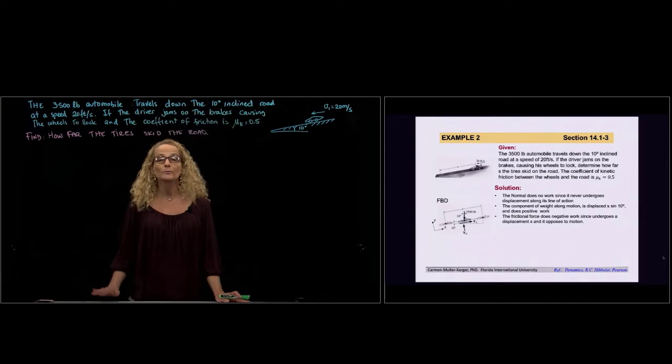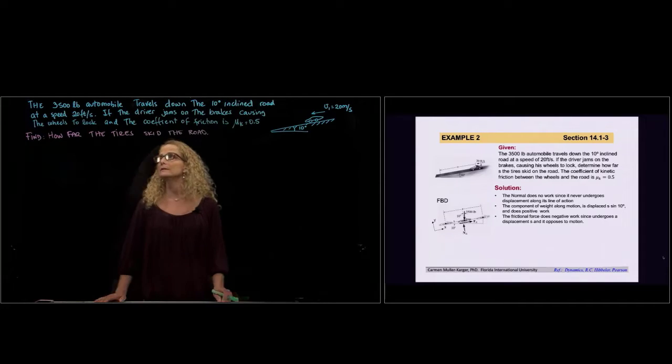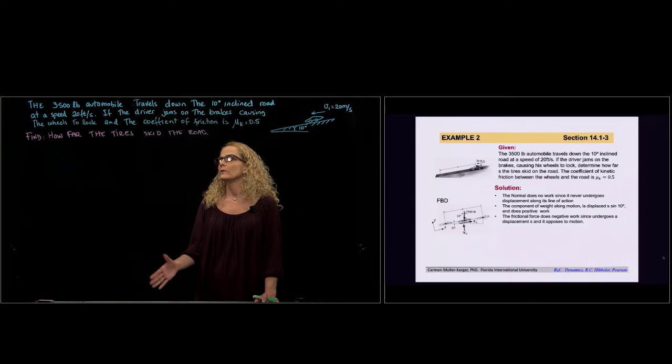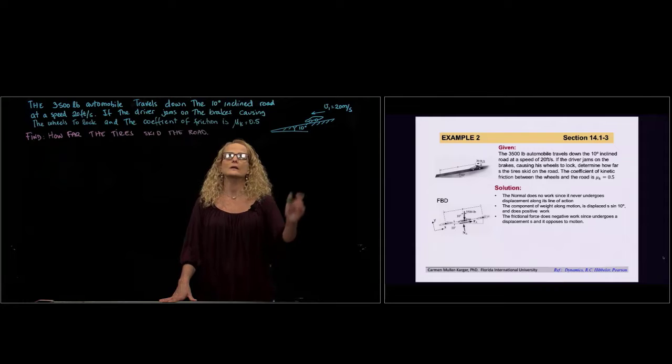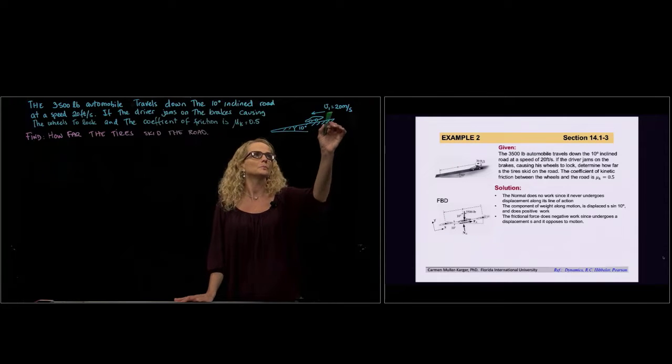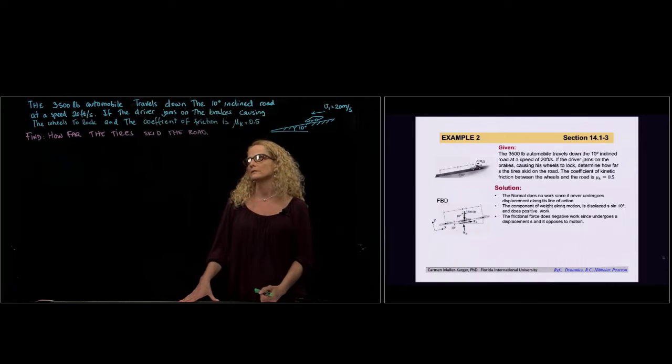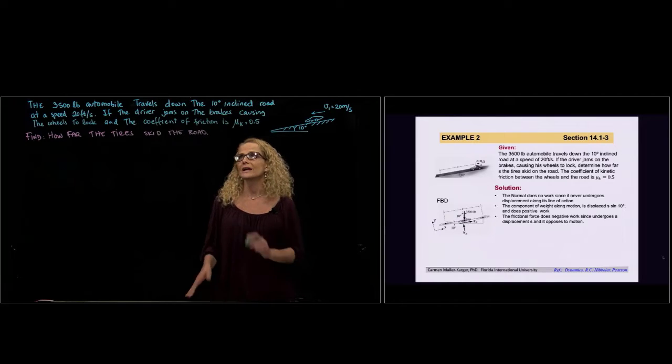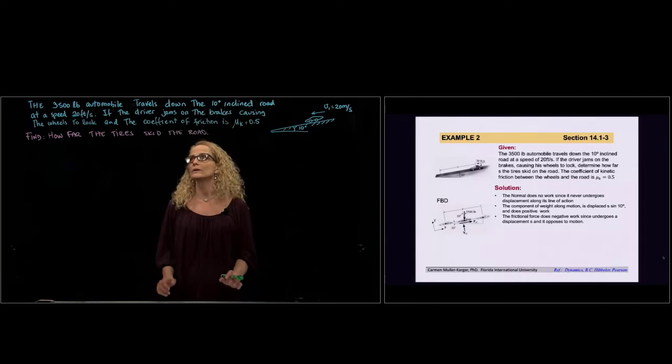Hi, this is example number 2 of chapter 14. We have this car, or automobile, which is 3,500 pounds and travels down an incline road with an initial speed of 20 meters per second. The driver jumps on the brakes.